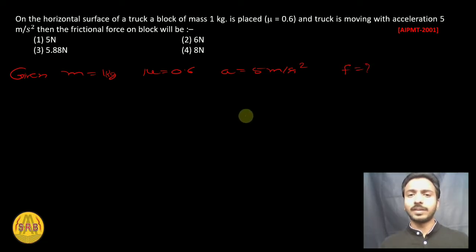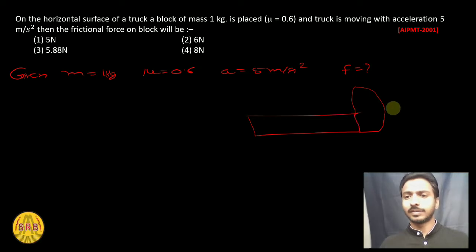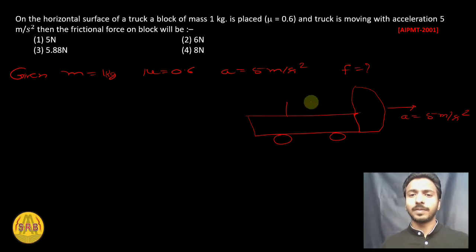So this is the diagram we make. Now we make a truck in the horizontal direction. This is the acceleration, which is given as 5 meter per second square. And this is where we make the block - this is 1 kg.